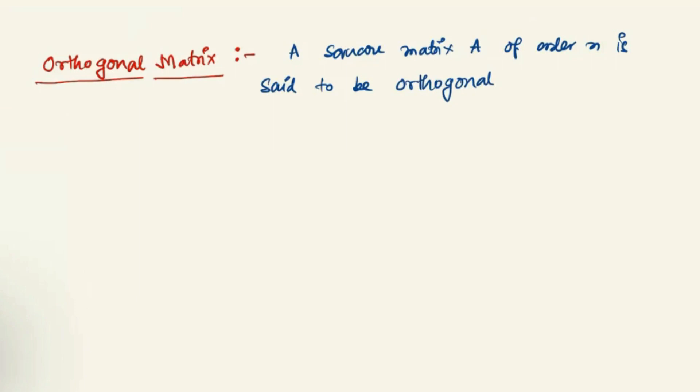If A transpose A equals A transpose A equals identity matrix of n. Similarly, you can write that A transpose equals A inverse.